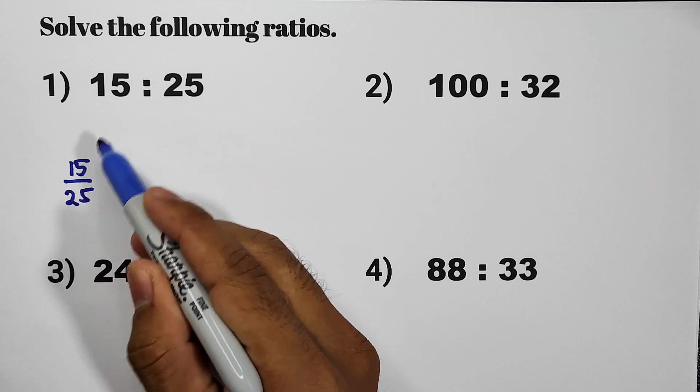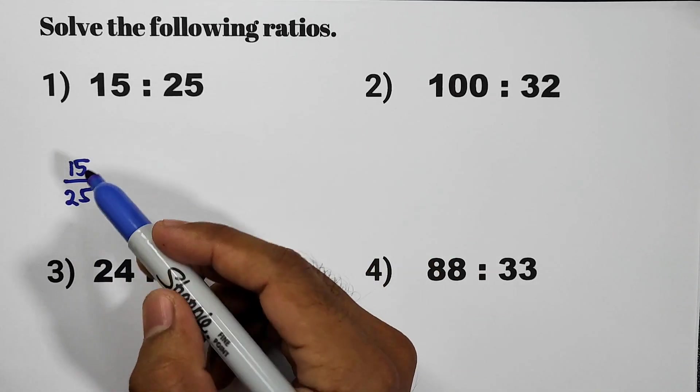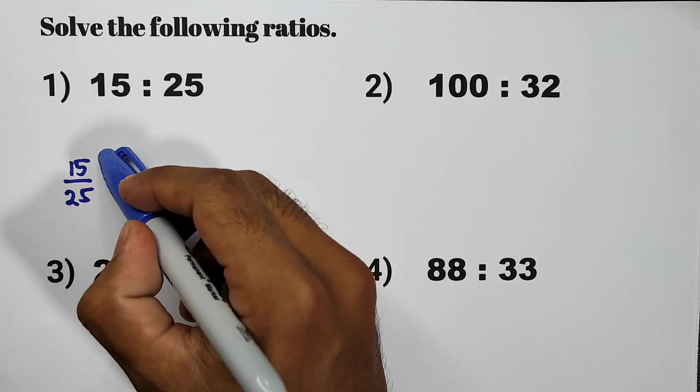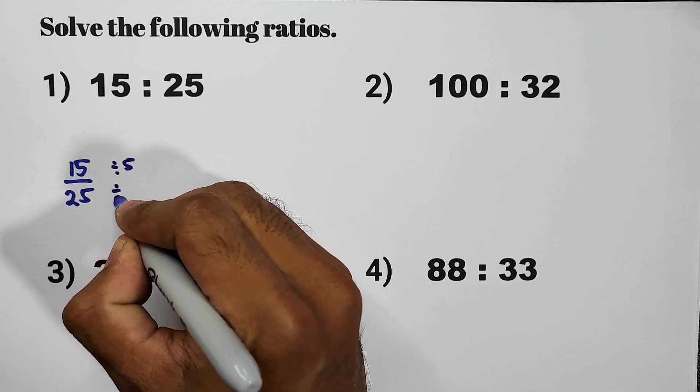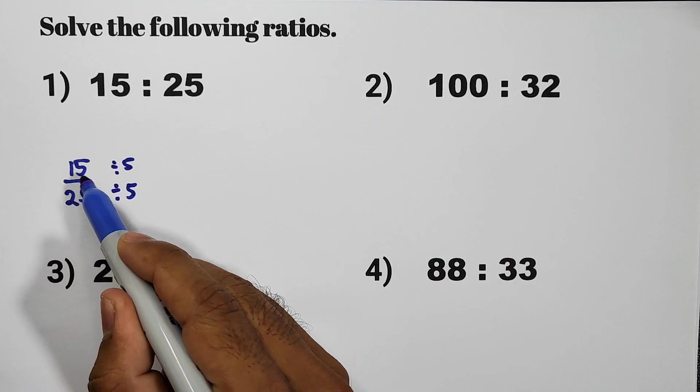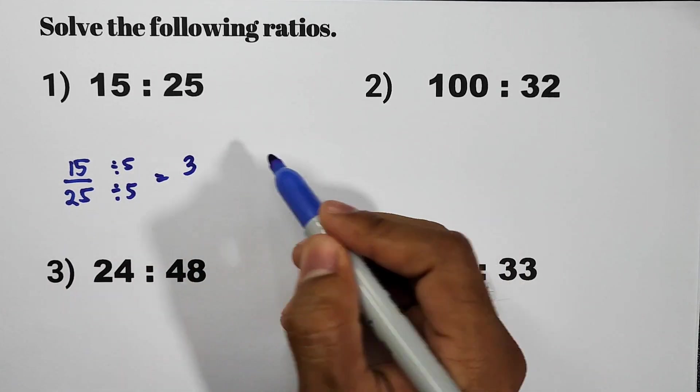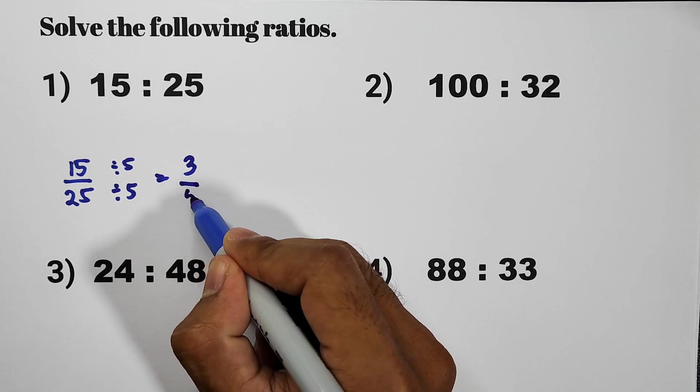What is the greatest common factor or GCF of 15 and 25? So the greatest common factor of 15 and 25 is 5. So divide both numerator and denominator by 5. 15 divided by 5, of course that is 3. And then 25 divided by 5, that is 5.